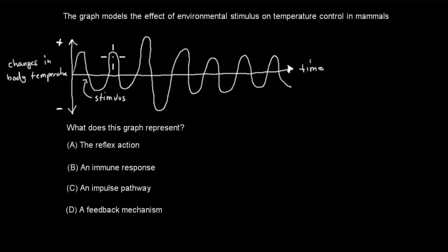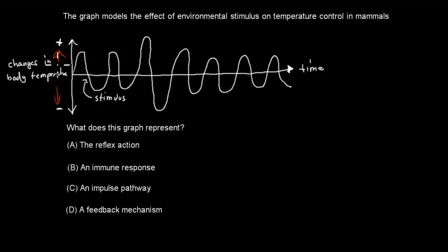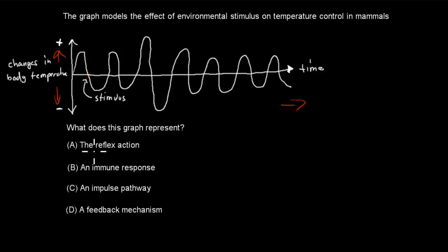The next question: A graph models the effects of environmental stimulus on temperature control in mammals. The y-axis shows change in temperature (positive and negative), the x-axis shows time, with squiggly lines indicating a stimulus. What does this graph represent? A. The reflex action. B. The immune system. C. An impulse pathway. D. A feedback mechanism. Pause the video and attempt the question.